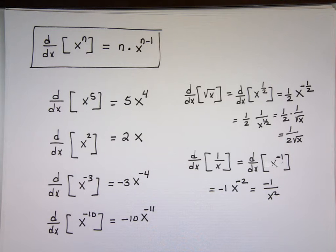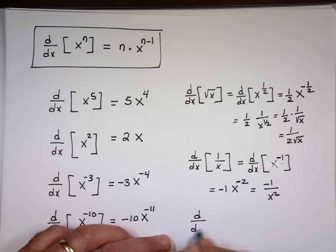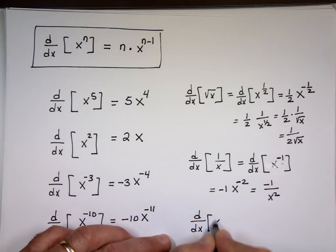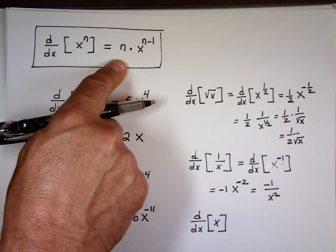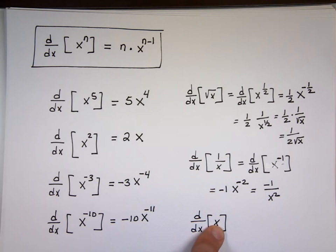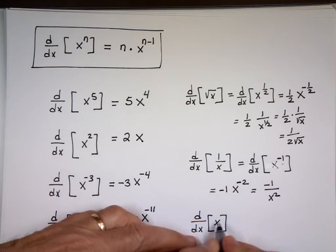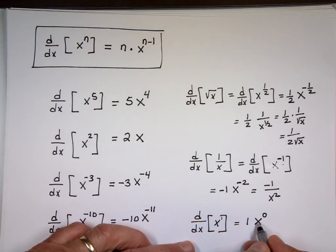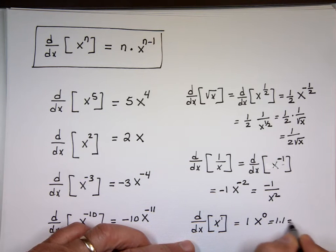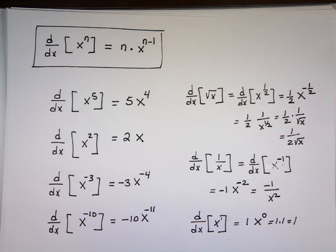What's the derivative of x? Because you might see that a lot. We'll use that rule. The power of x is 1 — move the power to the front and reduce the power by 1. Anything to the 0 power is 1. That's 1 times 1, which is 1. So the derivative of x is always 1.